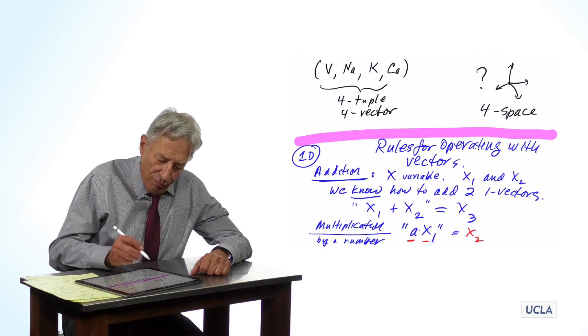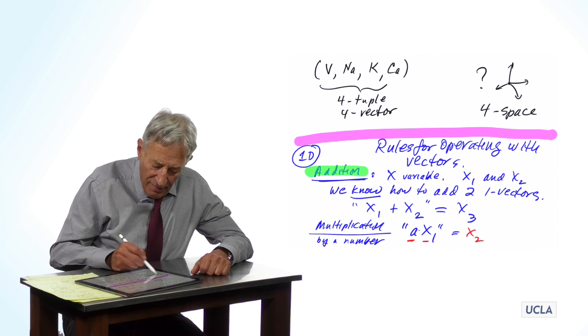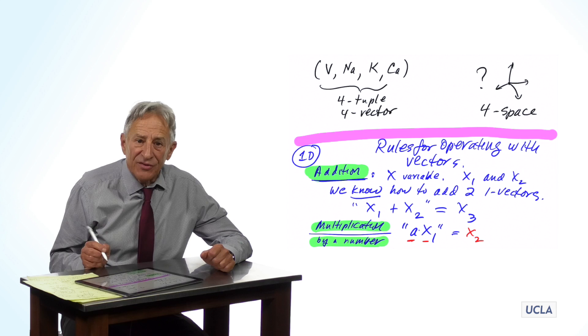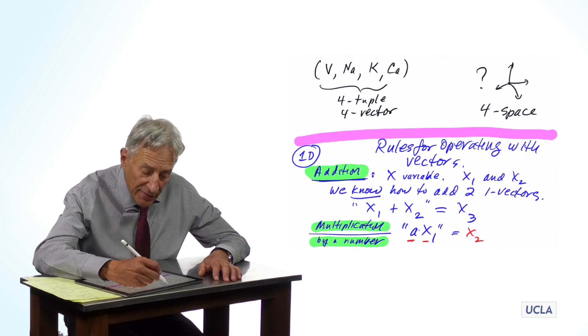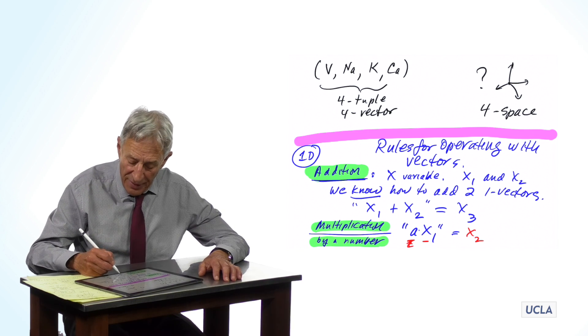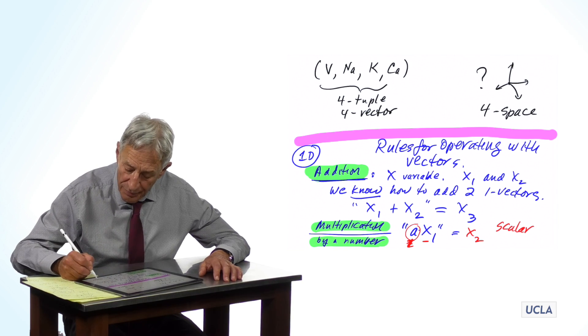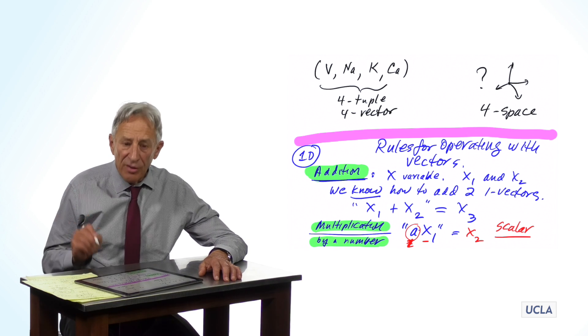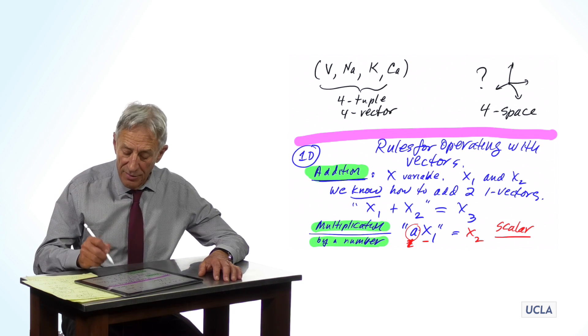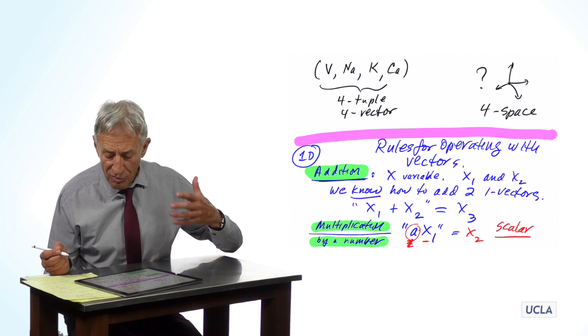So, these are the two principle rules for dealing with vectors. Addition of two vectors and multiplication of a vector by a number. And incidentally, when we do multiply this vector by this number here, the fancy name for this number is a scalar. So, a scalar is just a number that we multiply. It has no units. We multiply the vector by the scalar to get a new number of animals or temperature or whatever.